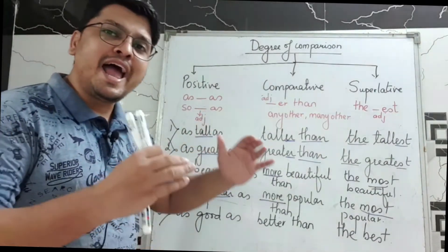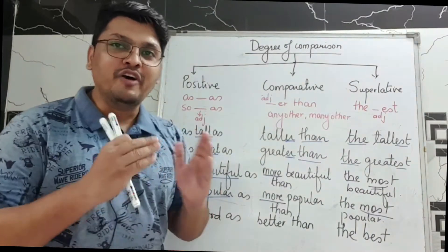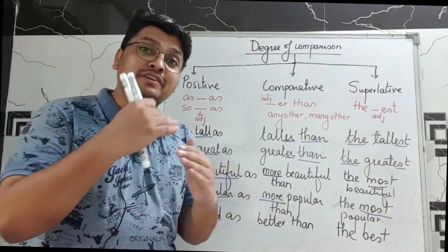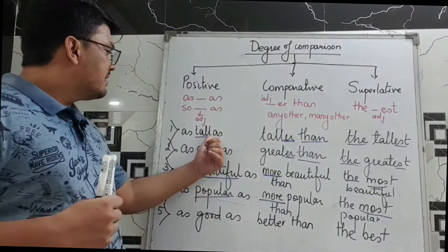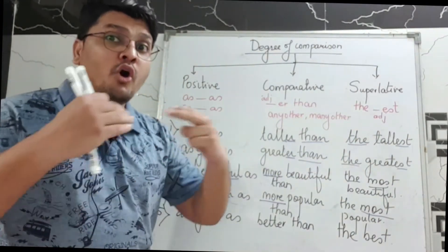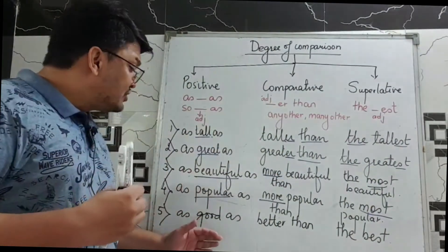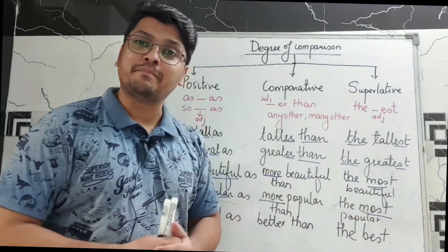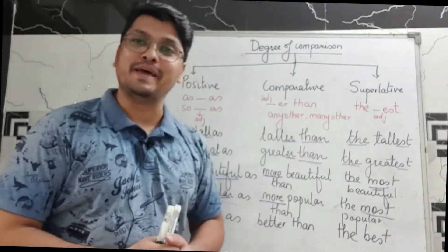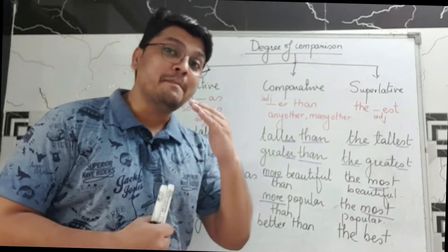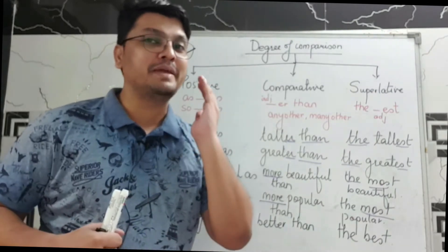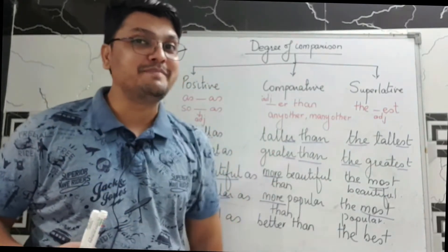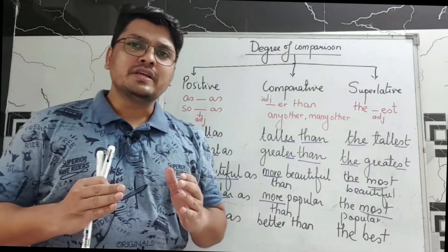So in this session I have taught you the basics of degrees of comparison. First I gave you the identification, then examples. I told you: for one-syllable adjectives use '-er' and '-est'; for two or more syllable adjectives use 'more' and 'most'; and for irregular adjectives like good, bad, and little, you will see completely different forms in the other two degrees.